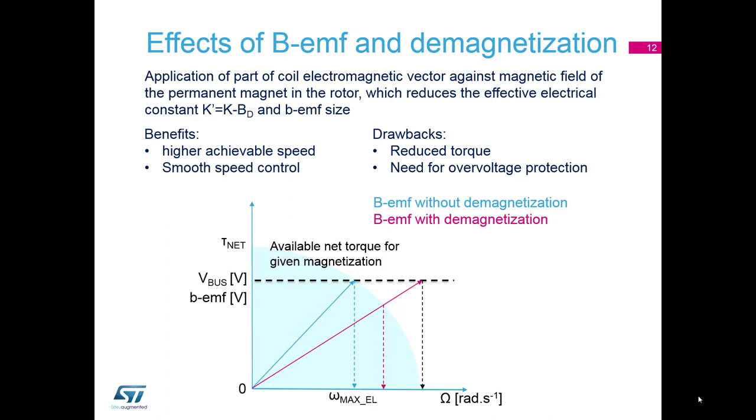There are some benefits of the demagnetization, like higher achievable speed than originally constructed, and in some cases, it allows smoother speed control. On the other side, it reduces the torque at the maximum speed achievable. And in case we lose control of the motor at this in this overspeed region, we need to have an overvoltage protection of our power stage. This is because we are running the motor at the speed higher than the maximum electrical. And if we remove the demagnetization, the inducted voltage starts rising suddenly above the bus voltage, which can be dangerous to our power stage, to the bulk capacitors and to the transistors.